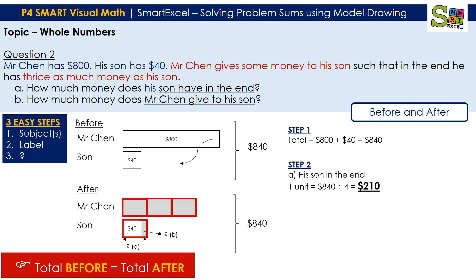And your second step will be, they are asking for how much does the son have in the end. So that will be, as you can see, in the after model, there are four units that sum up to $840. So to find one unit for the son will be $840 divided by 4, which is $210.